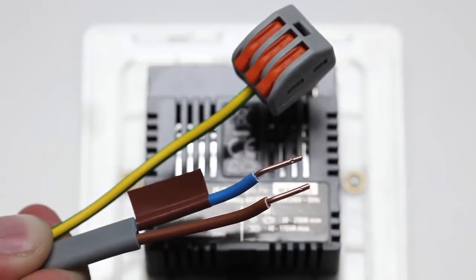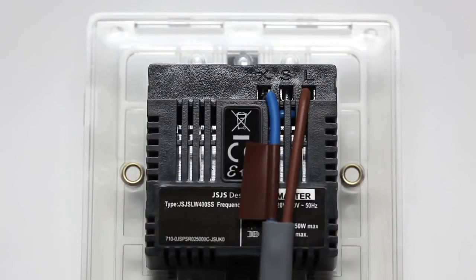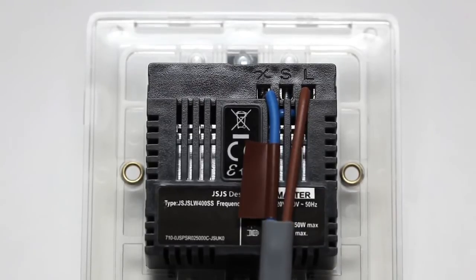The dimmer switch is double insulated, so doesn't need to be earthed directly. The switched live wire in may be marked by brown or red tape to emphasise that it's not a neutral wire.